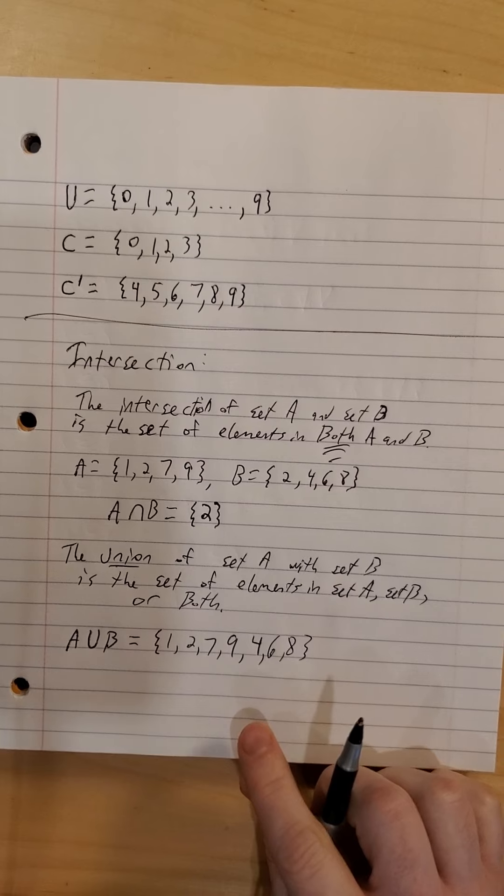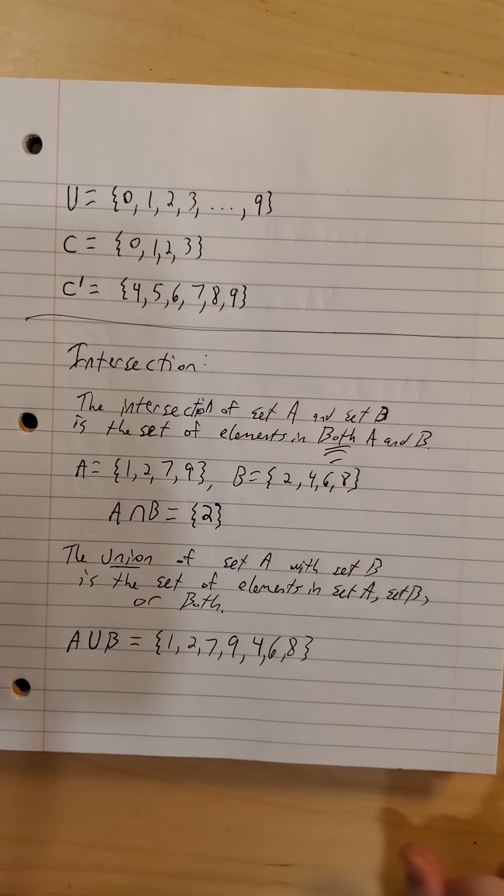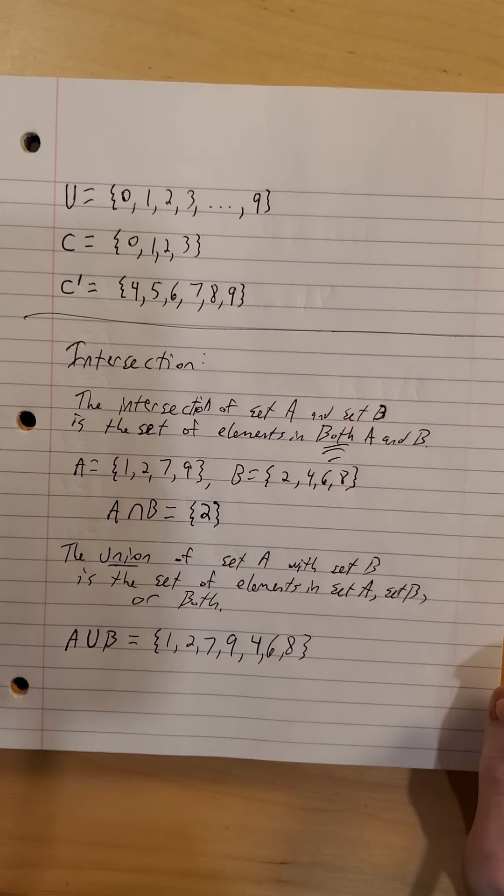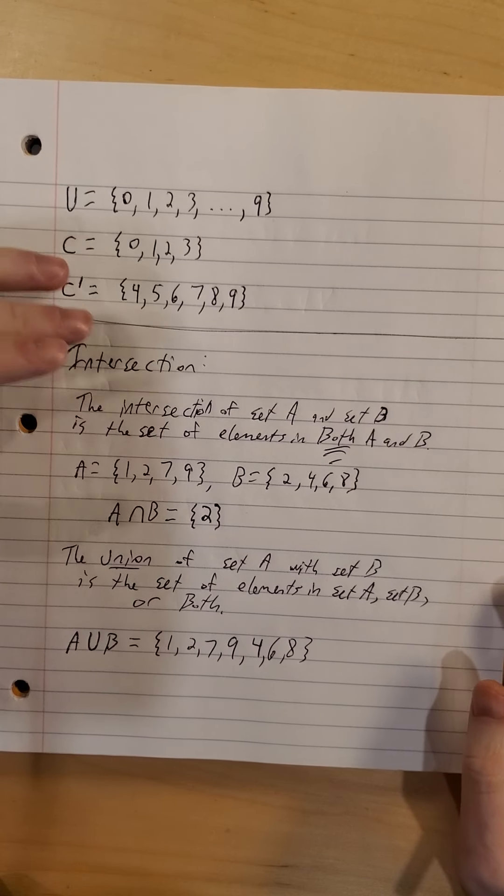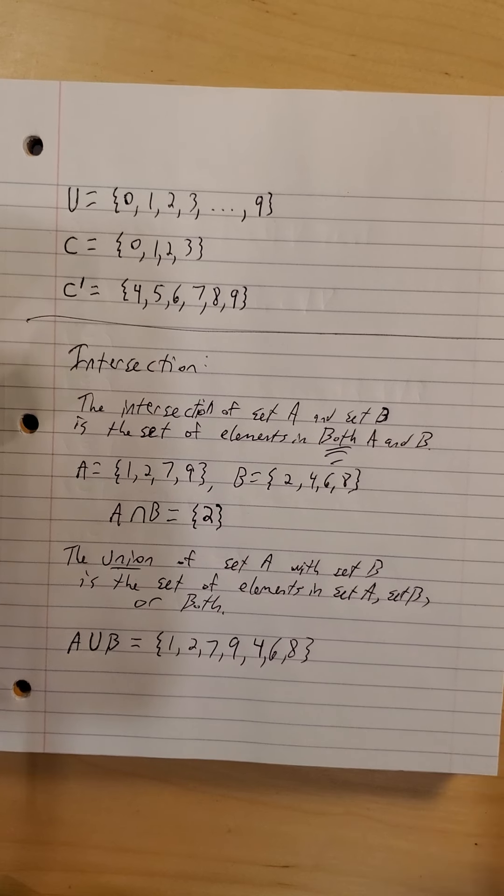So anything that was in one set or the other set or, special case here, 2 was also in both sets. So the intersection, just things that they have in common. The union is everything. Everybody included.